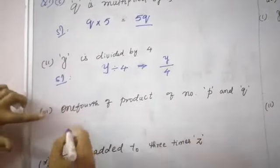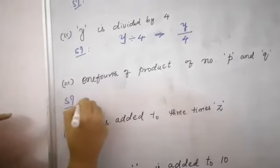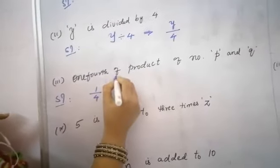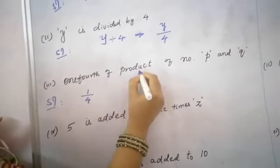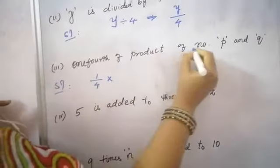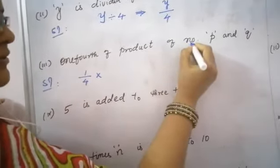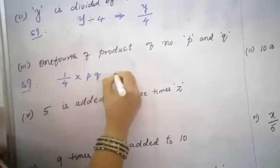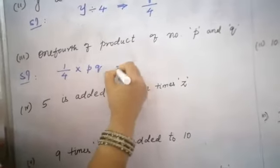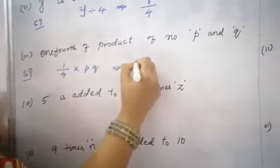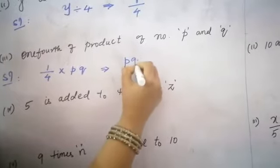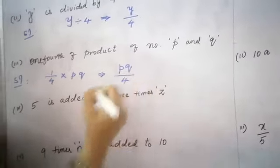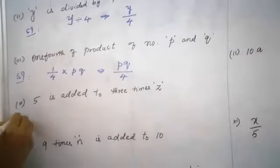Next: one fourth of the number P and Q. What is the meaning of 'of', children? 'Of' is nothing but product. So it becomes 1 into PQ, which becomes PQ. Variables always use small letters. So the answer is PQ by 4.